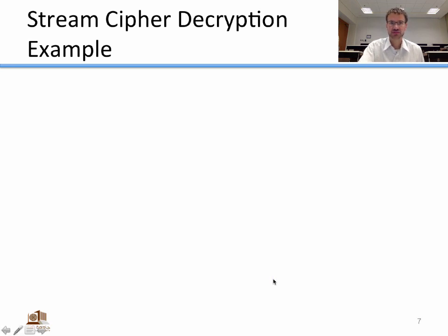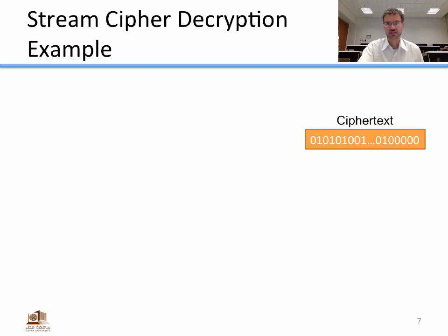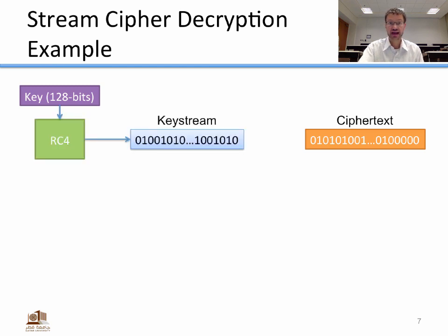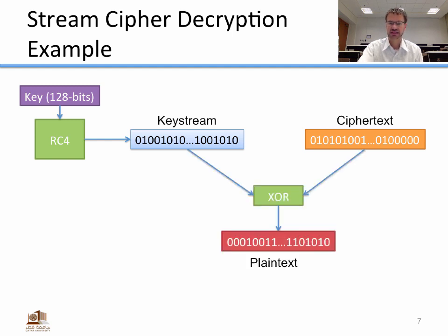For decryption, we take the cipher text and the same key that was used to encrypt. We put the key into RC4 and get out the same key stream. When we exclusive OR the key stream with the cipher text, we get the plain text. Plain text equals key stream exclusive OR'd with cipher text.